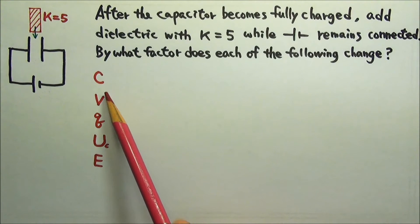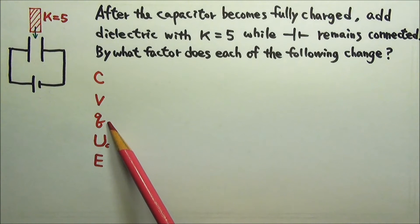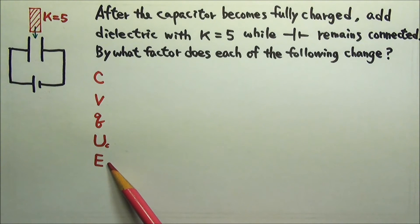Capacitance, voltage across the capacitor, the amount of charge on each plate of the capacitor, potential energy stored in the capacitor, and the electric field between the plates.